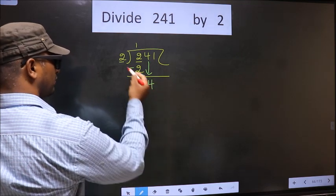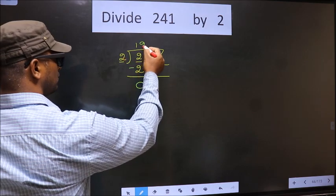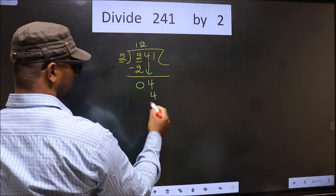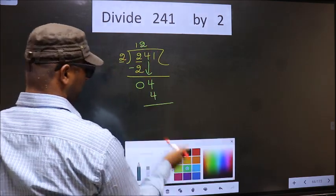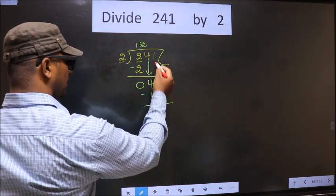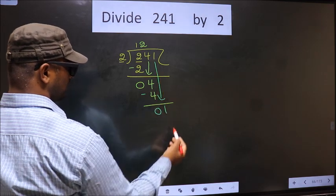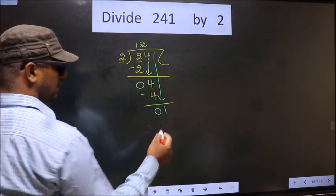So here 4, here 2. When do we get 4 in 2 table? 2 2's 4. Now you subtract 4 minus 4, 0. Now you bring down the beside number, that is 1 down, and this is where the mistake happens.